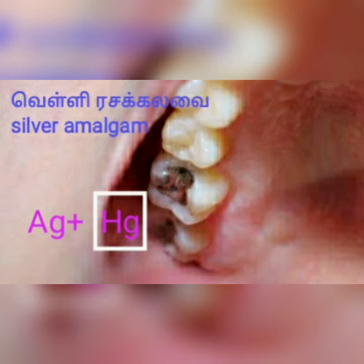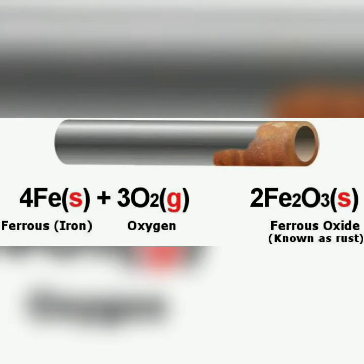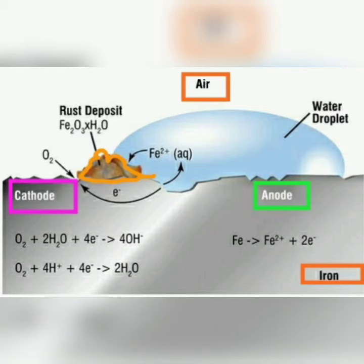Corrosion. That is the formation of rust. When iron reacts with oxygen, we get ferrous oxide. It is known as rust. See the picture. The pipe is rusted. What is the reaction takes place here?